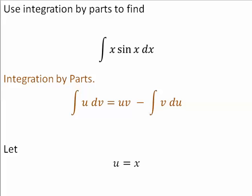I suggest that we let u equal x. The reason for that is if you find the derivative of x, you'll just get 1. Anytime you can reduce a function, that's a good candidate for your u. And x will be reduced down to 1 when we take the derivative.